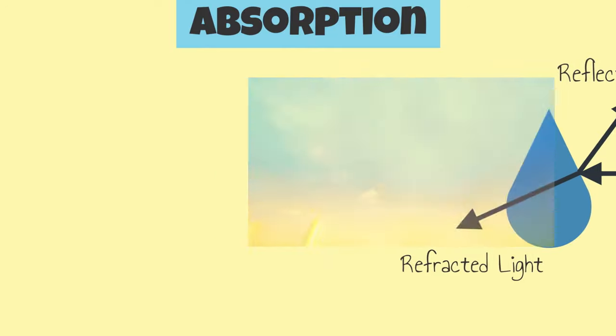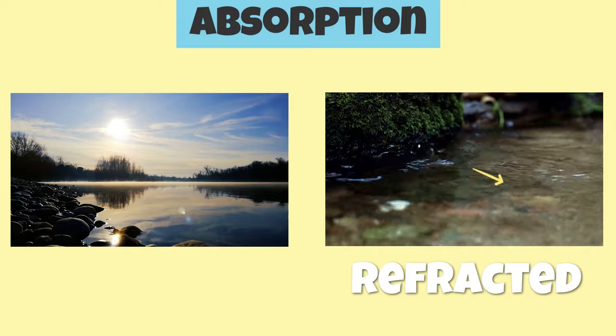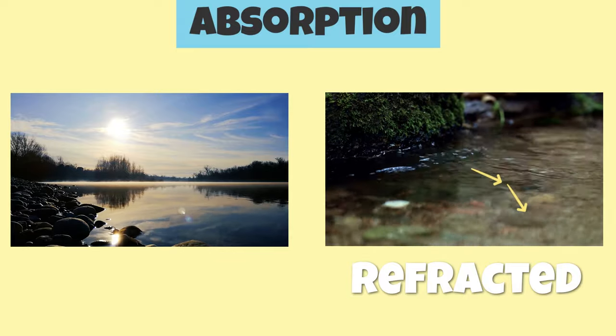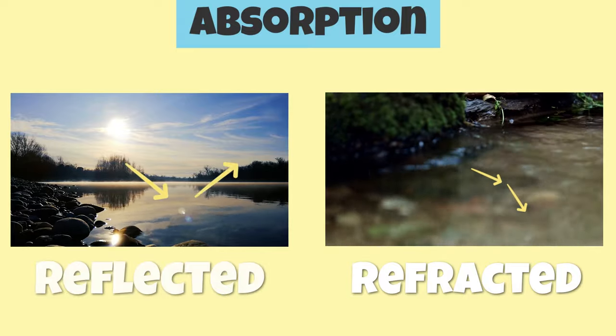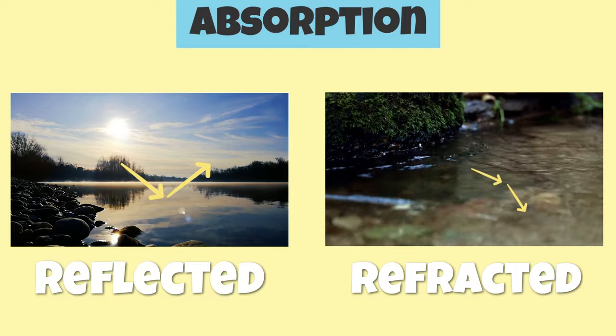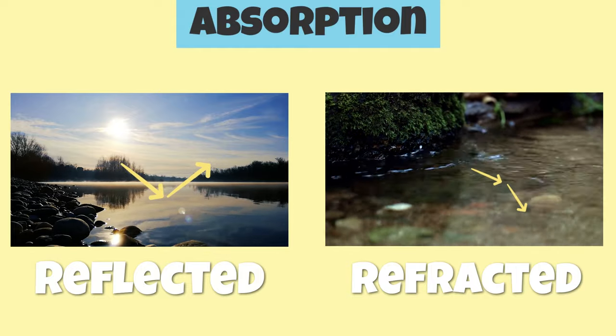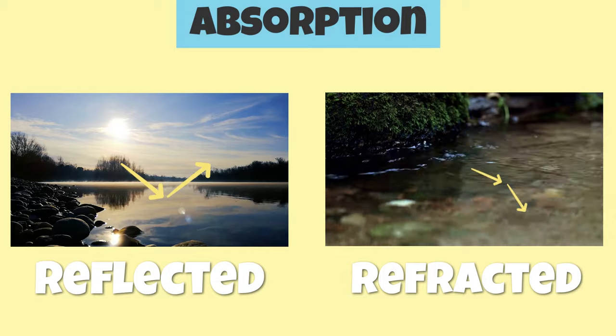We can see this in a lake. Some light rays are refracted as they pass from the air to the water, while other rays are reflected. This is why you can see a reflection in a lake, but you can also see how objects appear distorted inside the water.